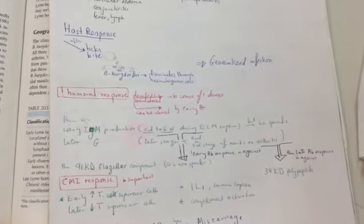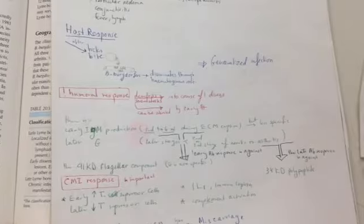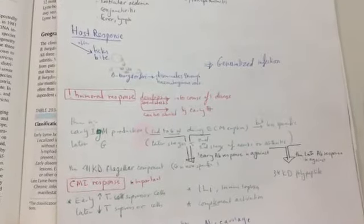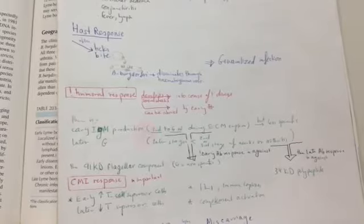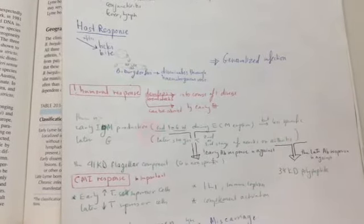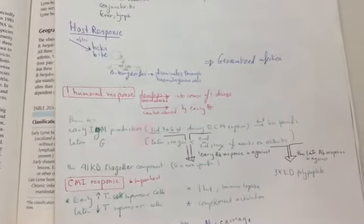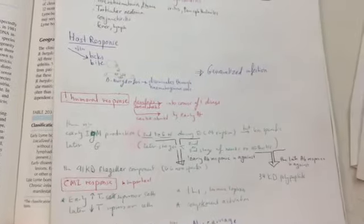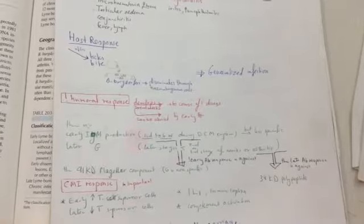The early antibody response is against the 41 kilodalton flagellar component, which is non-specific, and the late antibody response is against 34 kilodalton polypeptide. So the humoral response develop several weeks into the course of the disease and can be aborted by early treatment. There is immunoglobulin early, immunoglobulin M, third to six weeks during erythema chronica migrans, later immunoglobulin G in the second or third neurones and arthritis, and the early it is against the 41 kilodalton flagellar component, and the late is against 34 kilodalton polypeptide.